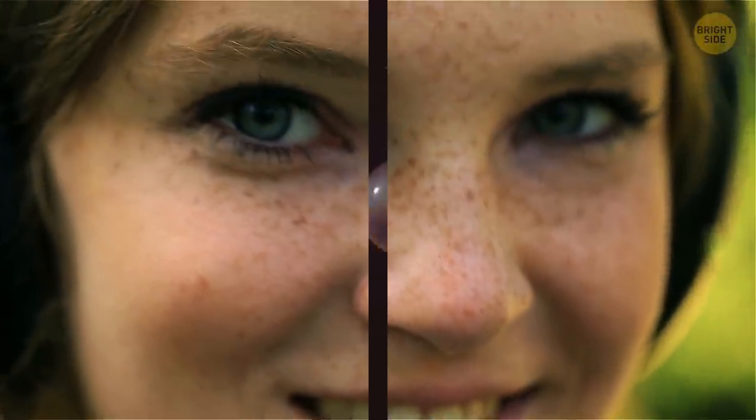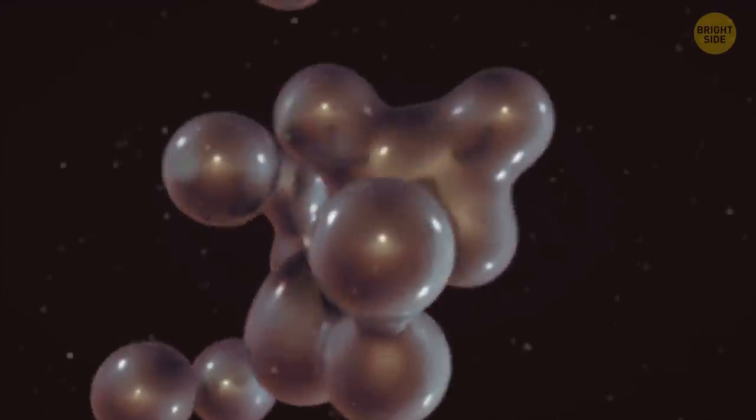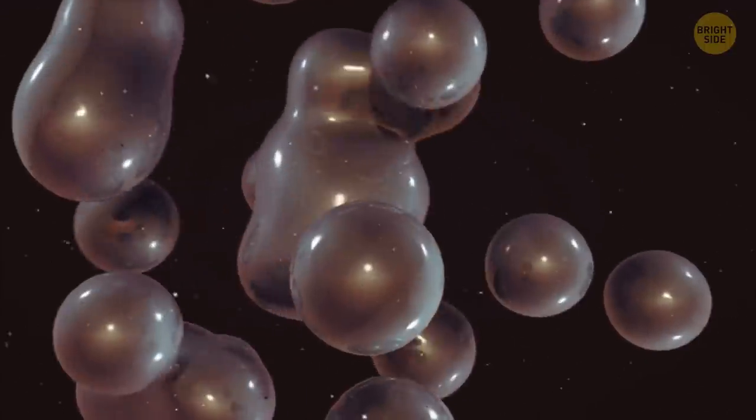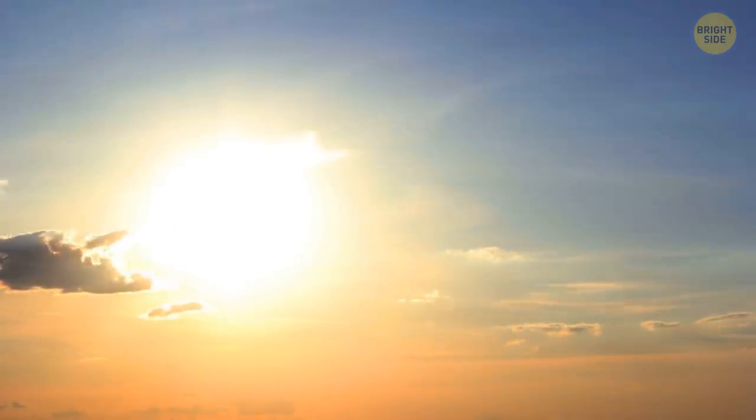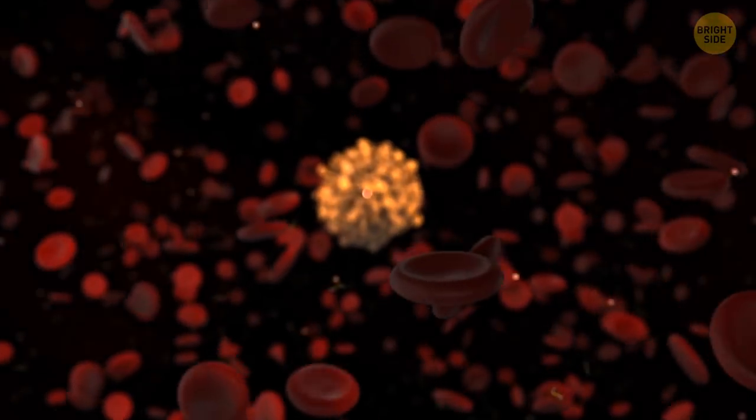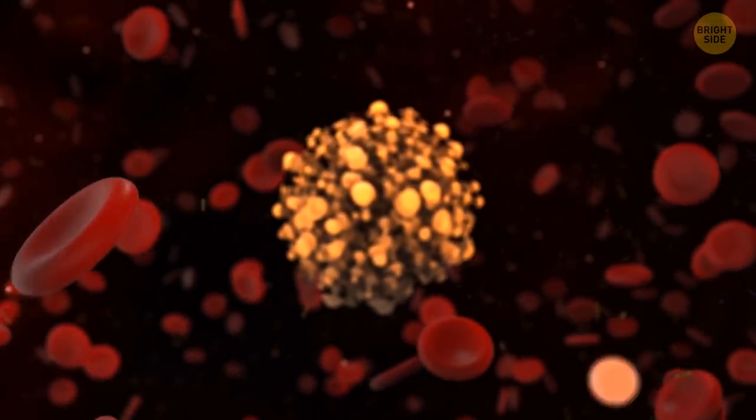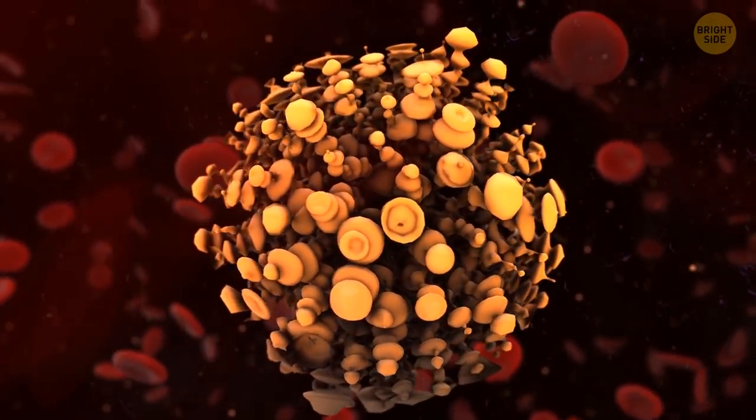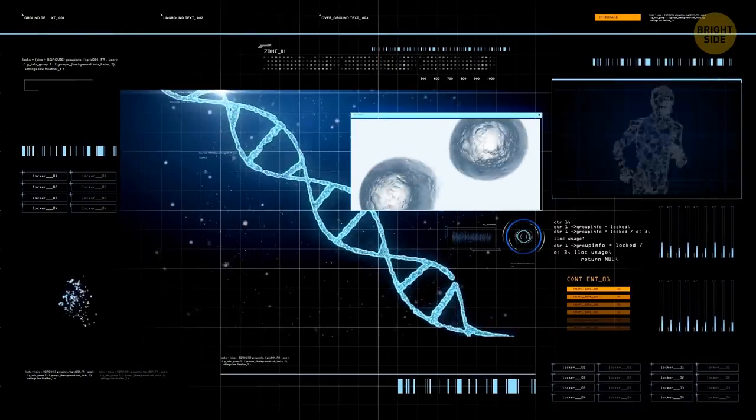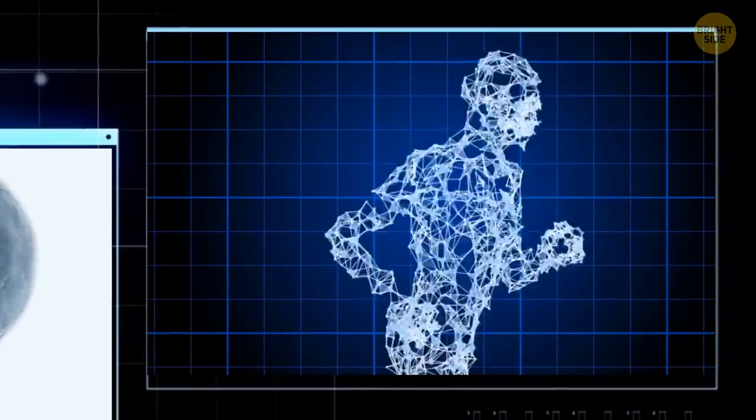This pigment is also responsible for freckles. They're a way for your skin to protect itself from the sun. Under sun exposure, cells start to produce more melanin to make the skin darker and protect it from sunlight. That's why people have more freckles during the sunny time of the year. Just like with the blue eyes, the mutation of having red hair is recessive, and some people carry it without even knowing it. We never know what we have in us, so it's hard to predict what our descendants will look like.